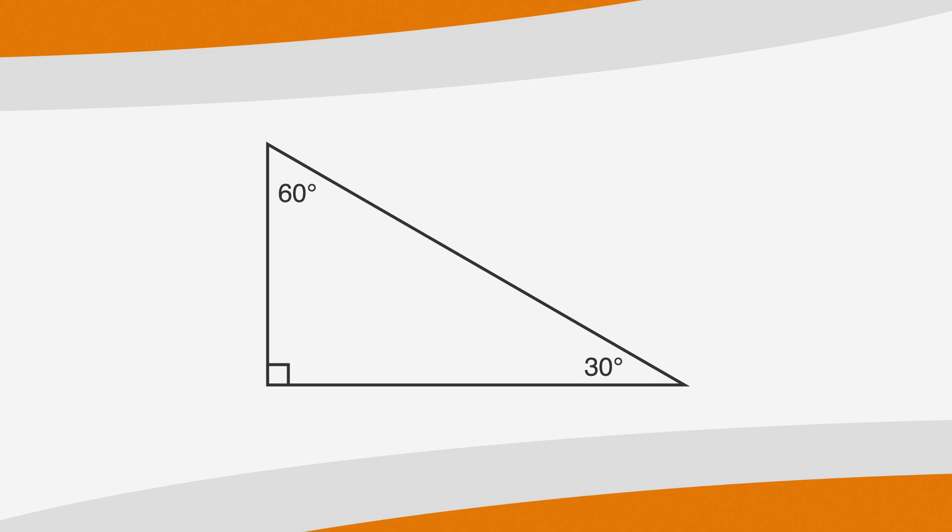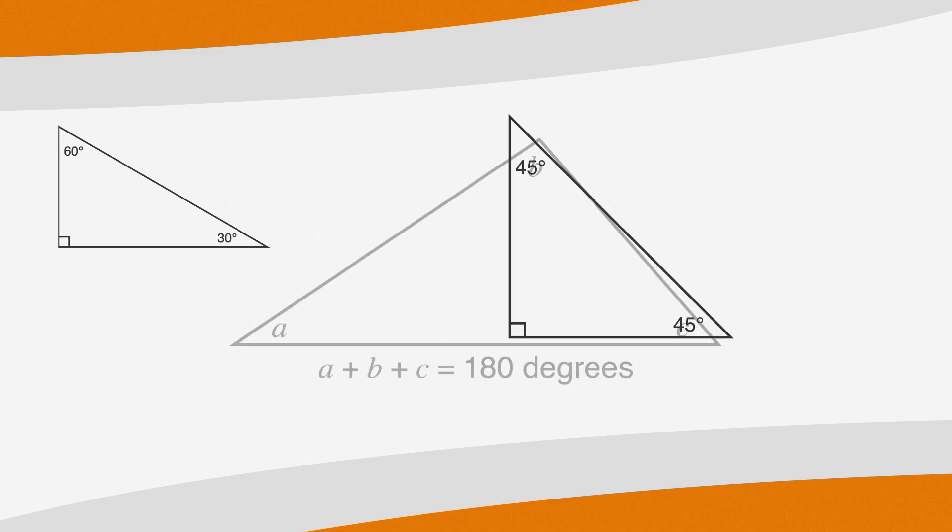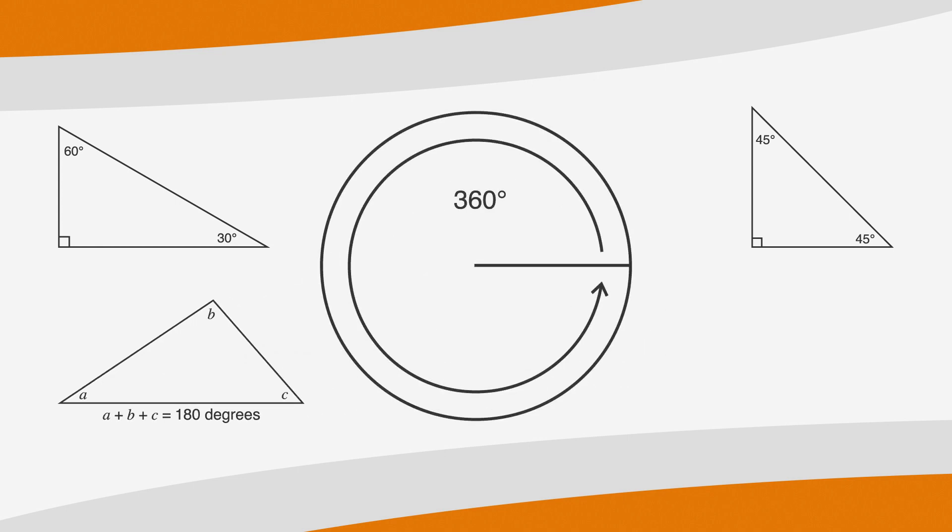By now you probably know degrees pretty well. You're familiar with 30-60-90 triangles and 45-45-90 triangles and you know there are 180 degrees in a triangle and 360 degrees in a circle.